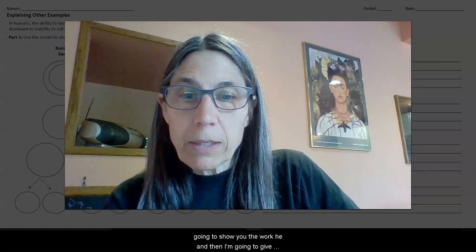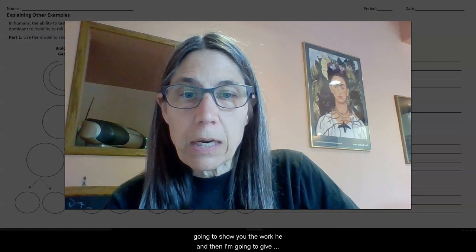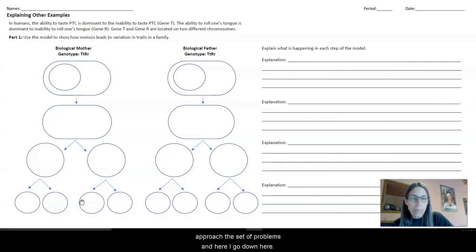So I'm going to shrink myself down and I'm going to show you the worksheet and then I'm going to give you a little bit of background review to make sure you know how to approach this set of problems. This is 6.1 explaining other examples and we have parents, biological mother, biological father. And again, we have these two traits that we're interested in, tongue rolling and PTC tasting. And so the designations for these genes are going to be T for tasting and R for tongue rolling.